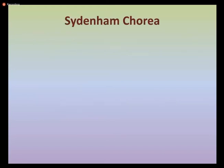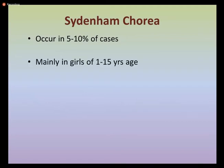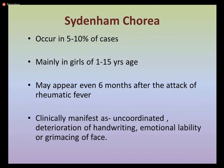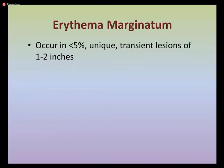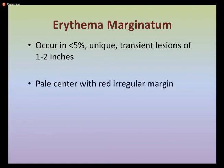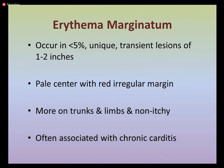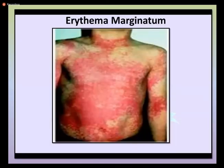Sydenham's chorea occurs in 5 to 10 percent of rheumatic fever cases, is more common in girls aged 1 to 15 years, and mainly appears six months after the rheumatic fever attack. Clinically it presents as uncoordinated deterioration of handwriting, emotional lability, and grimacing of the face — as if the person is in pain or discomfort. Erythema marginatum occurs in less than 5 percent of cases, forming unique transient lesions about 1 to 2 inches with pale centers and red irregular margins, more common on the trunk and limbs, usually non-itchy, and associated with chronic carditis.